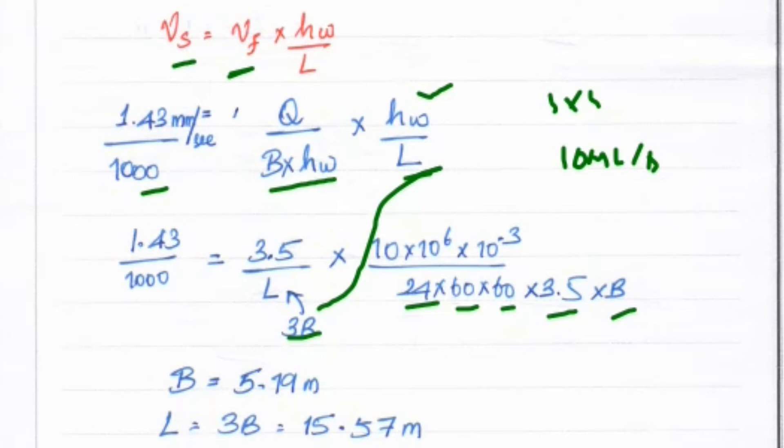Now the only unknown is B value. Solving the equation, we get B = 5.79 meters.